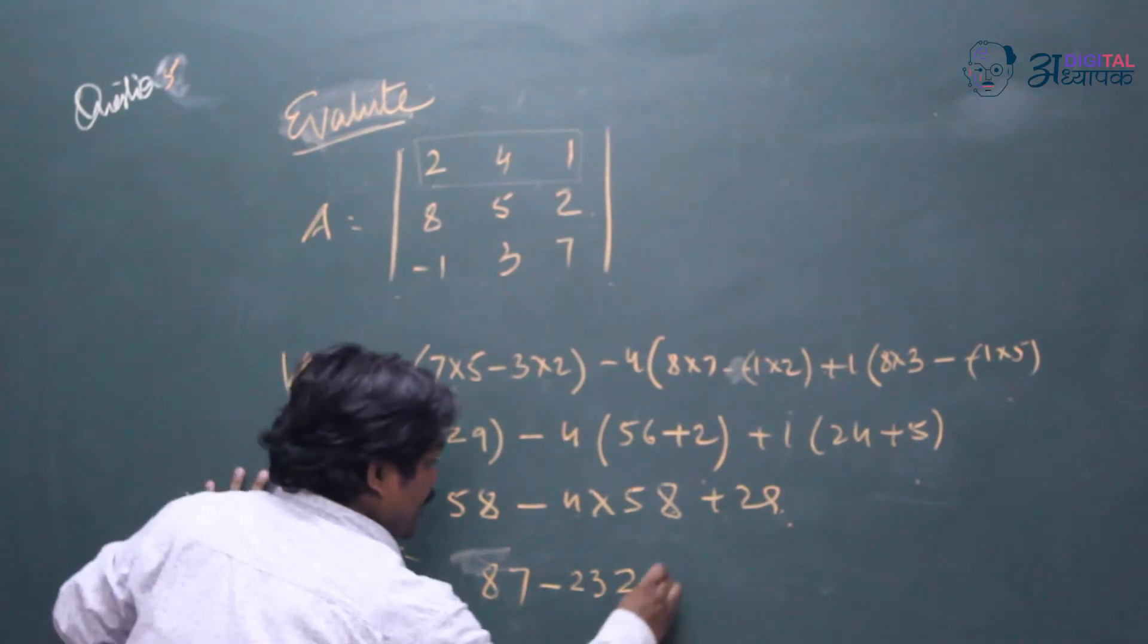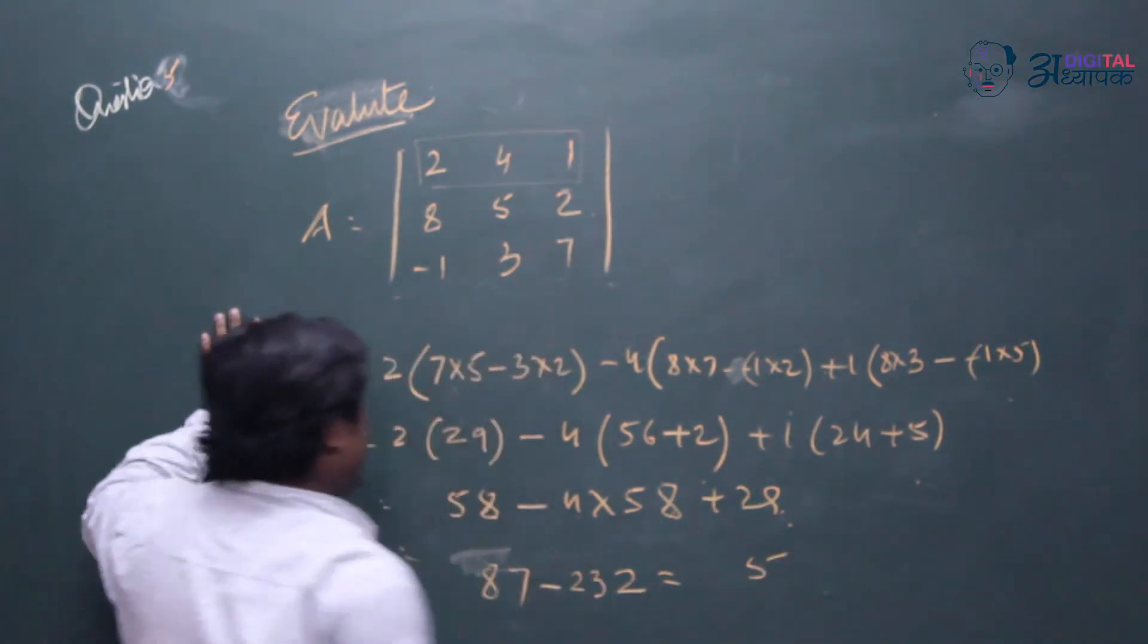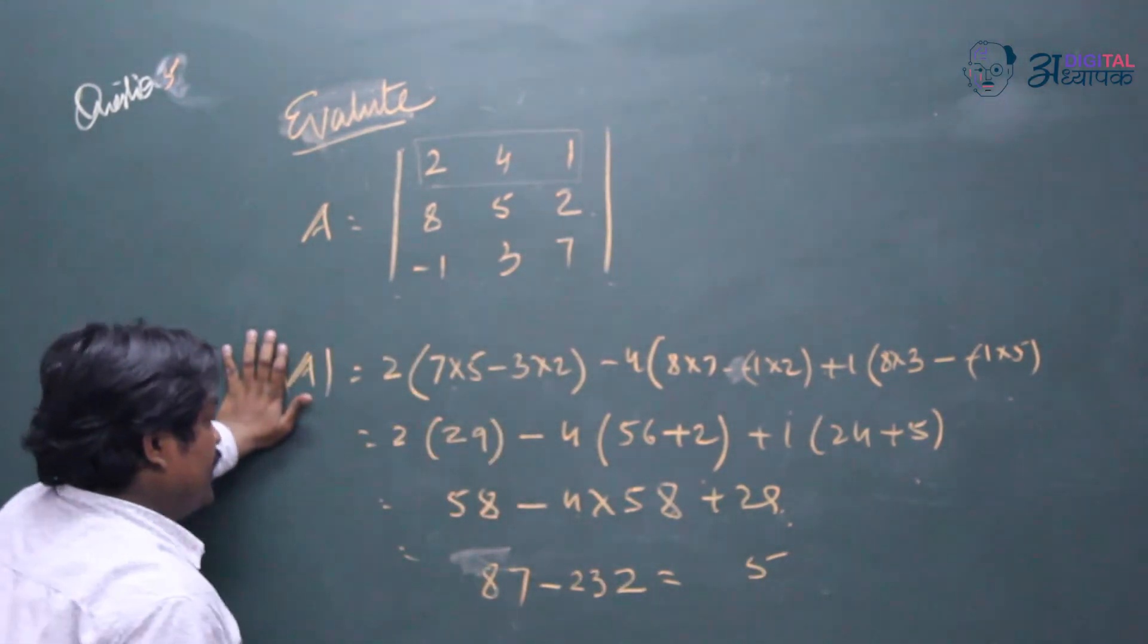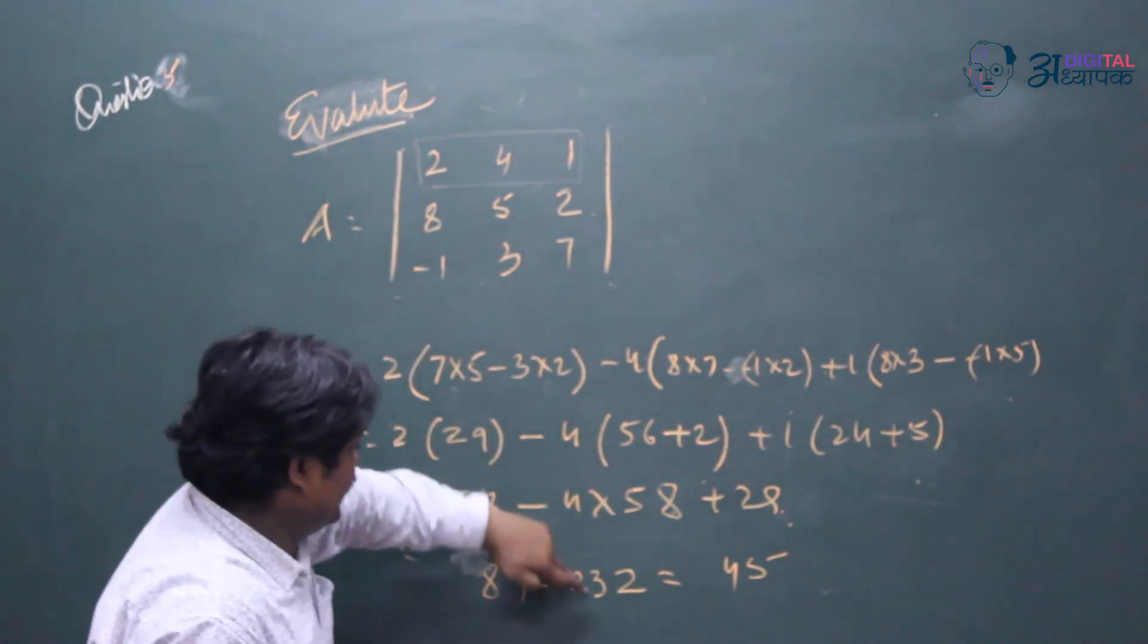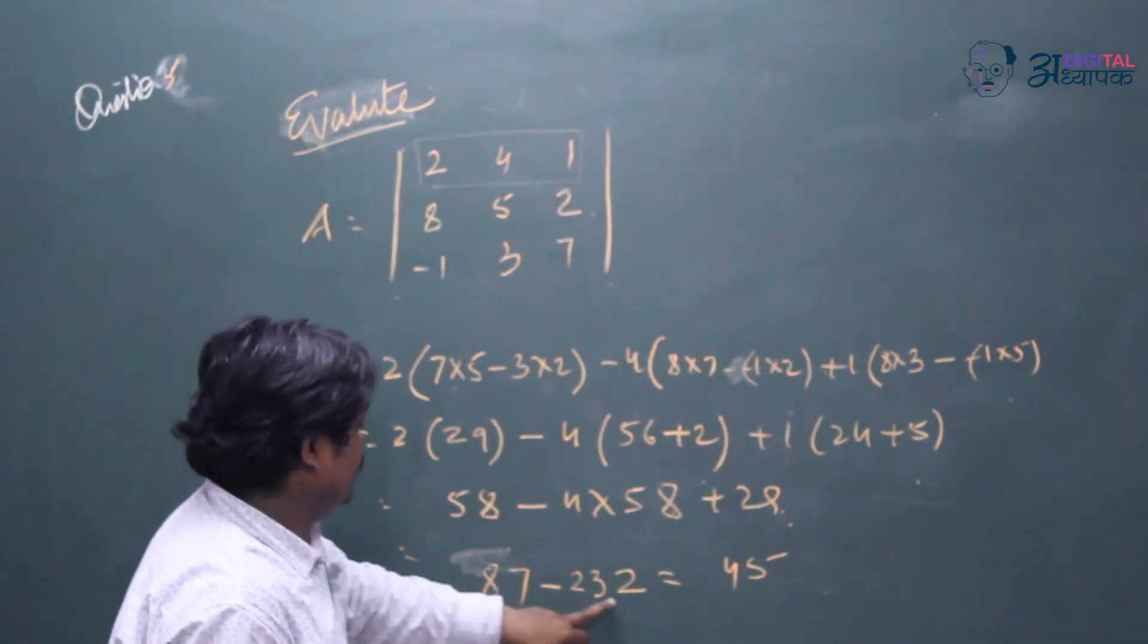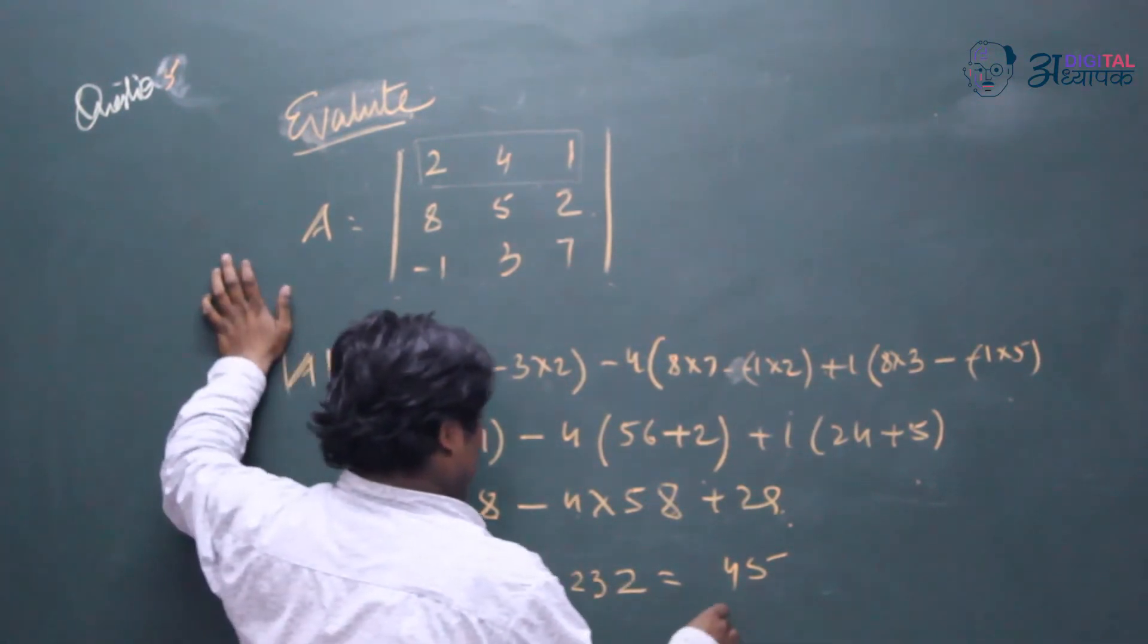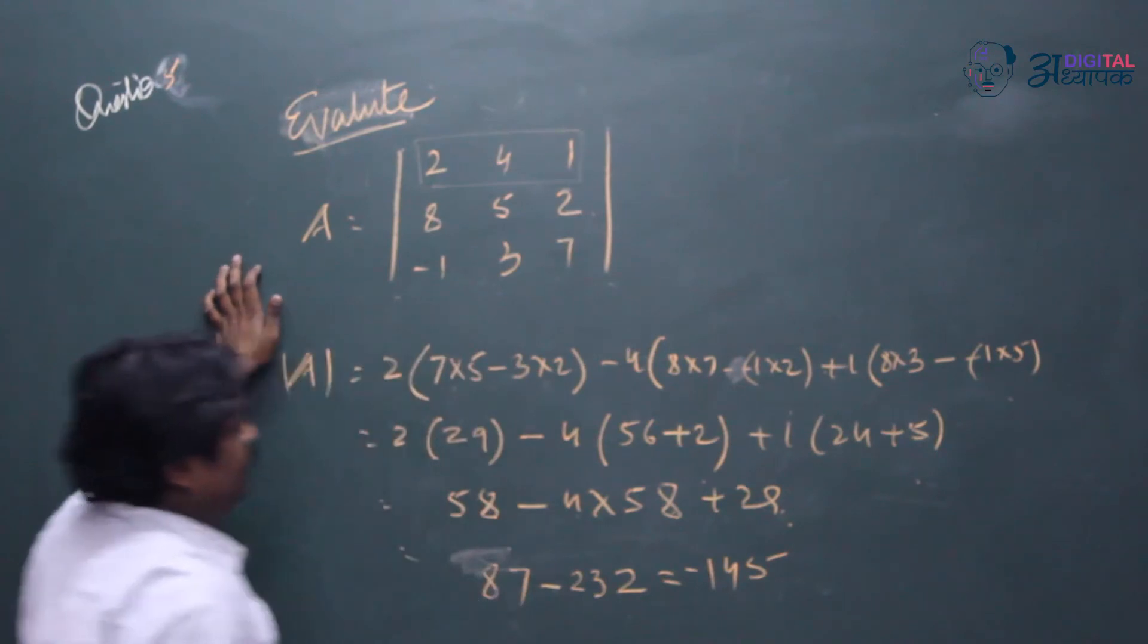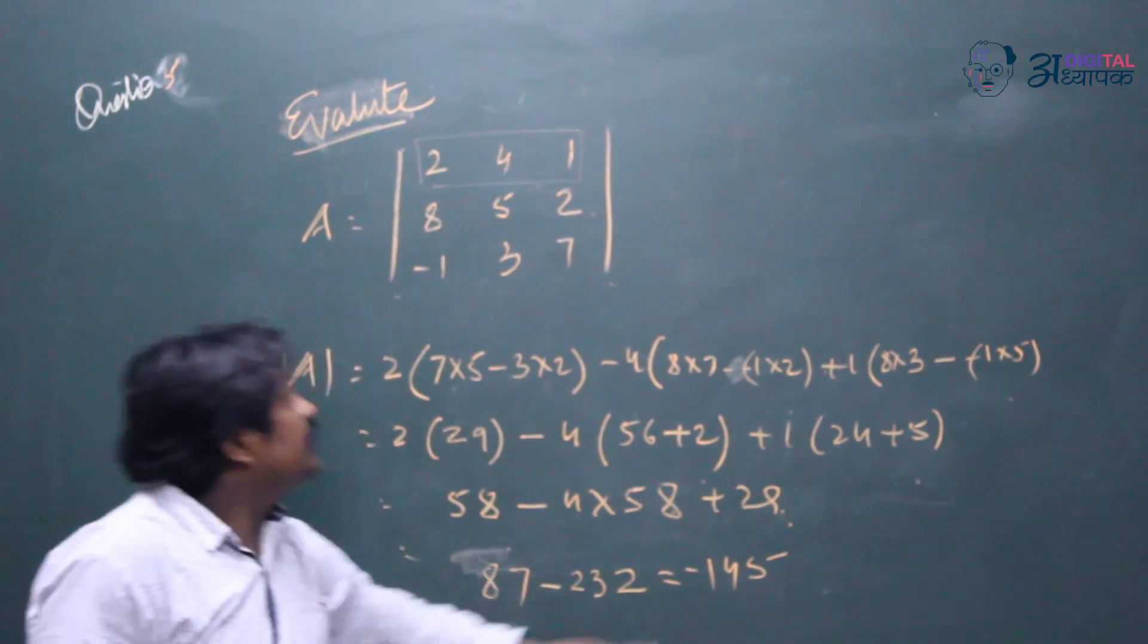So if we minus, 32 minus 87, 12 minus 7 that will be 5 and then 12 minus 8. So minus 145. This is the answer.